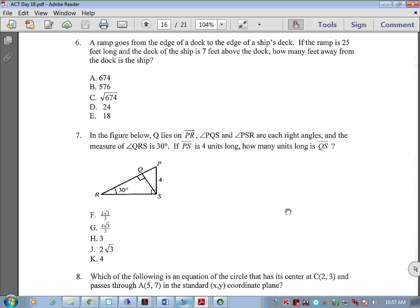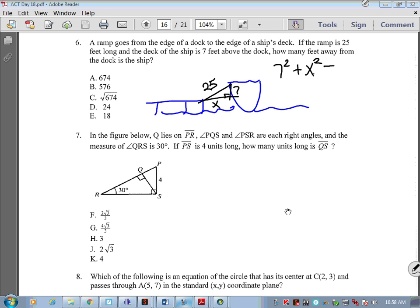A ramp goes from the edge of a dock to the edge of a ship's deck. If the ramp is 25 feet long and the deck of the ship is 7 feet above the dock, how many feet from the dock is the ship? So some of this comes down to just understanding this. If this is my boat and I've got a dock, and I've got a ramp that is going to go from the dock to the ship, that should be at a right angle. If the ramp is 25 feet long and the deck of the ship is 7 feet above the dock, that's 7 feet there. How many feet away from the dock is the ship? That means I should be finding this, and we know that our hypotenuse is 25.